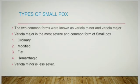Next, we will talk about the types of smallpox. There are two types of variola virus: variola major and variola minor. Variola major is the most severe and most common type of smallpox. Subtypes of variola major include ordinary, modified, flat, and hemorrhagic. Ordinary is the most common type.